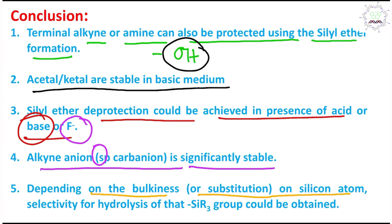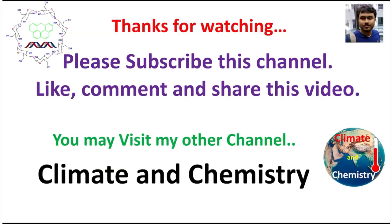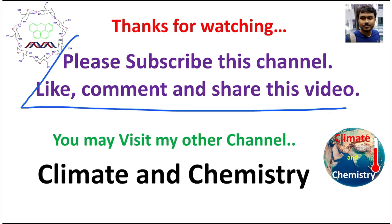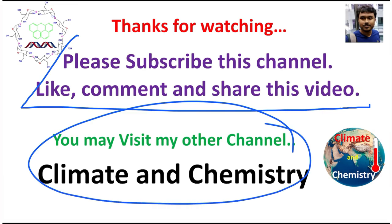Finally, depending on the bulkiness of substituents on the silicon atom, selectivity for hydrolysis can be achieved — this is the concept of steric protection of silane compounds. This is the end of the discussion. I hope this video is useful. Please write your opinion in the comment box and visit my other channel. Stay happy, stay blessed!